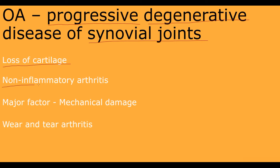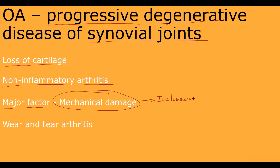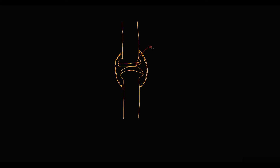Osteoarthritis is considered a non-inflammatory form of arthritis — not because there is no inflammation, but because inflammatory damage is not the predominant type of damage. In osteoarthritis, the main factor that destroys cartilage is mechanical damage, and mechanical damage only subsequently causes inflammation in the joint.